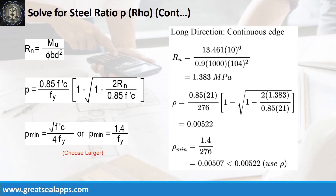Given long direction, continuous edge moment equals 13.461 kN·m/m. Resistance factor equals 0.9. B equals 1,000 mm and D equals 104 mm. The beam design ratio Rn equals 1.383 MPa, and reinforcement ratio ρ equals 0.00522.